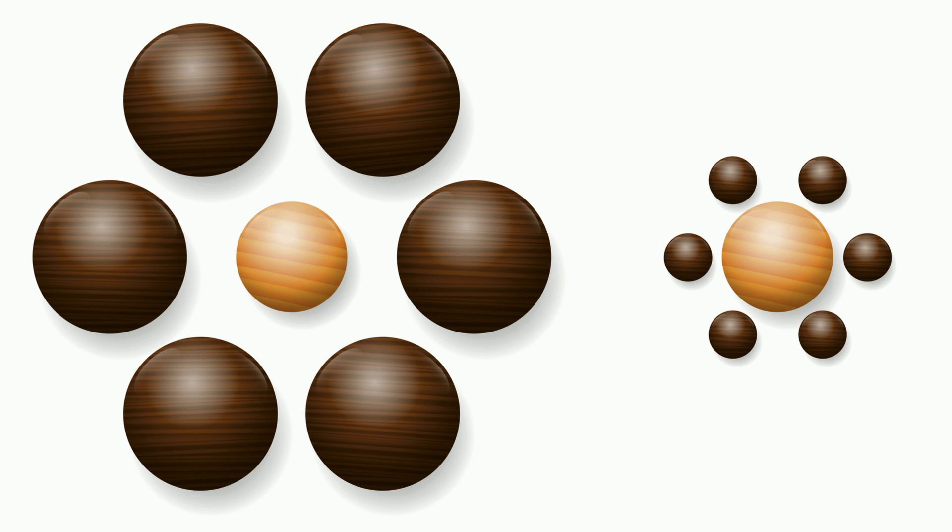For example, in this picture, your brain wants to associate the ball in the middle with the balls around it and make the ball on the right larger.